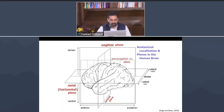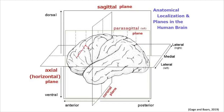When we talk about an area called the dorsolateral prefrontal cortex: dorsal means it is on the top part of the brain, lateral means it is on the lateral aspect of the brain, and prefrontal means it is in the front. So we call this area the dorsolateral prefrontal cortex.